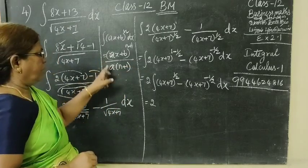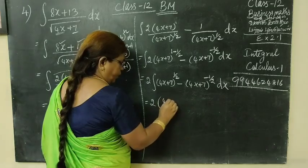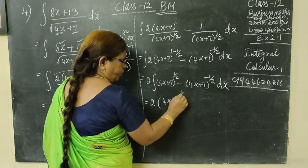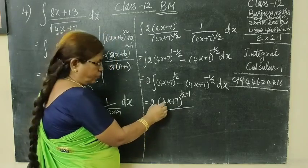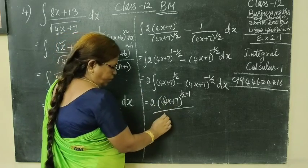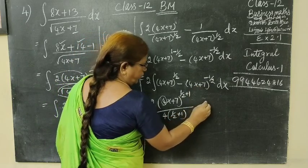a is the denominator. So in this way, 4x plus 7 whole power n plus 1 by a bracket. A is 4, so 4 bracket half plus 1. Minus, also in this way.